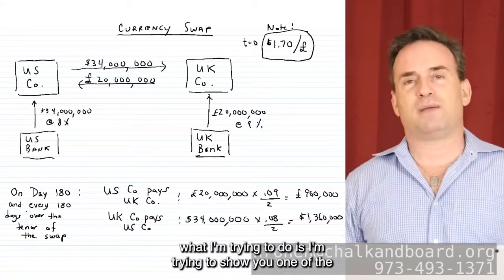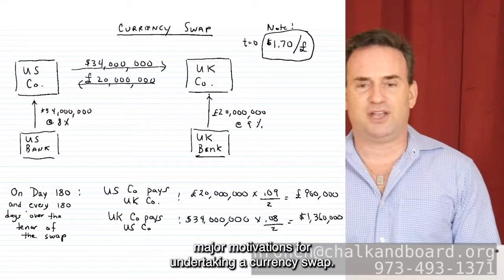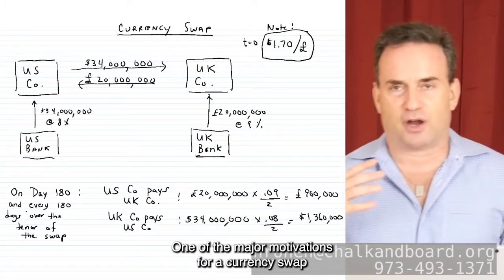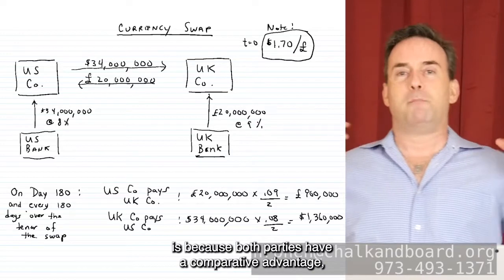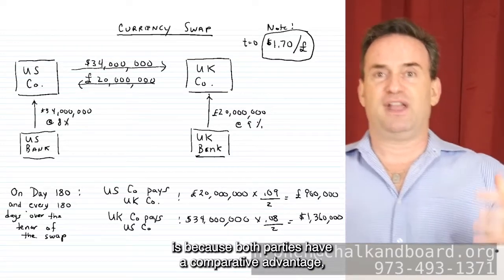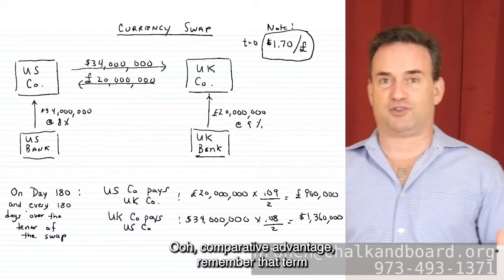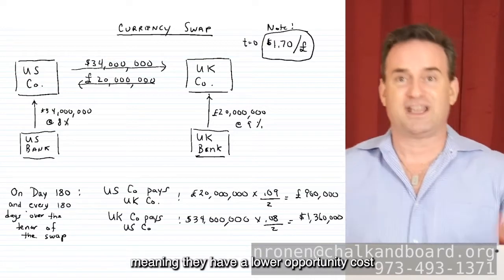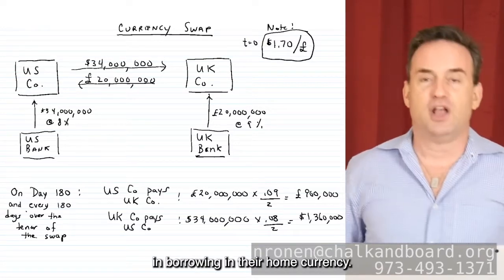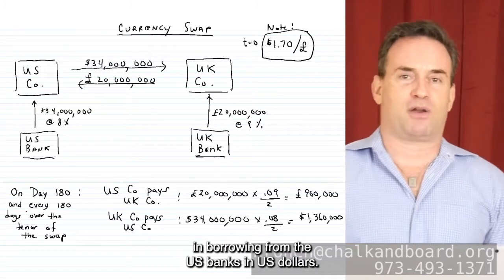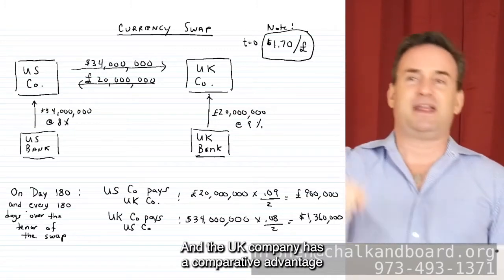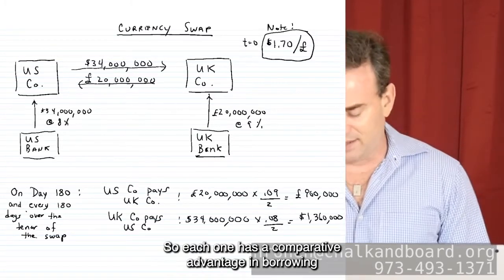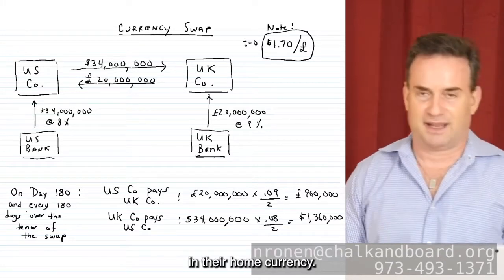In this example, I'm trying to show you one of the major motivations for undertaking a currency swap. One of the major motivations is that both parties have a comparative advantage — remember that term from economics in level one — meaning they have a lower opportunity cost in borrowing in their home currency. So the US company has a comparative advantage in borrowing from US banks in US dollars, and the UK company has a comparative advantage in borrowing in their home currency.